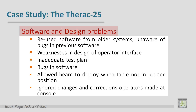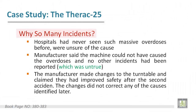The software design problems include: reused software from older systems while being unaware of bugs in the previous software, weaknesses in the design of the user interface, an inadequate test plan, and bugs in the code. Specifically, it allowed the beam to deploy when the table was not in the proper position, and it ignored changes and corrections that operators made at the console.